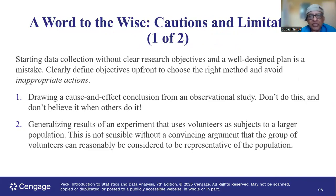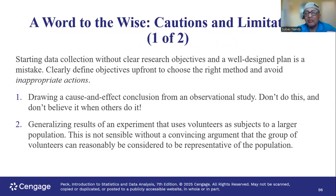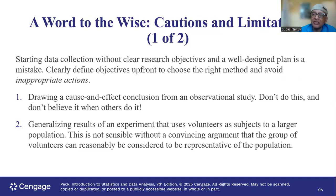A word to the wise — cautions and limitations. Starting data collection without clear research objectives and a well-designed plan is a mistake. We should have a clear objective. For example, the college hired me to find out the population mean age. I cannot reach the entire population — it's too large, and I don't have the time or money. So I will select a simple random sample, find the sample mean age, and make an educated guess about the population mean age.